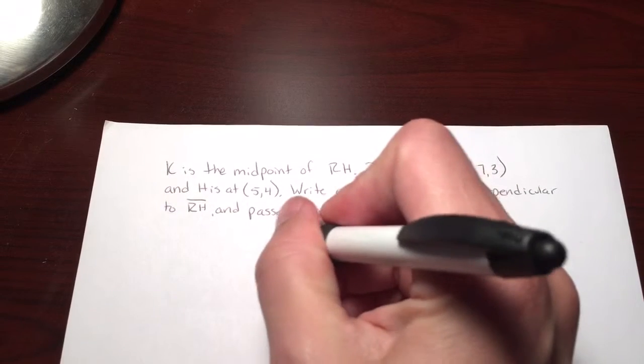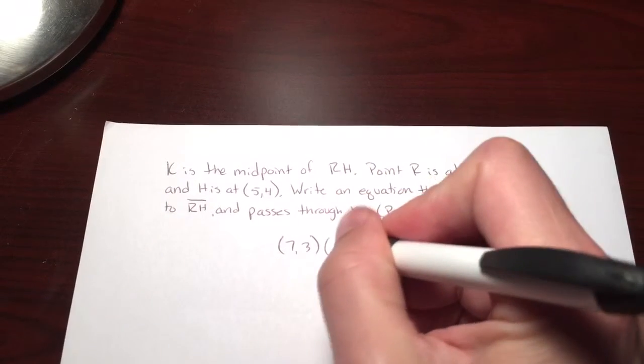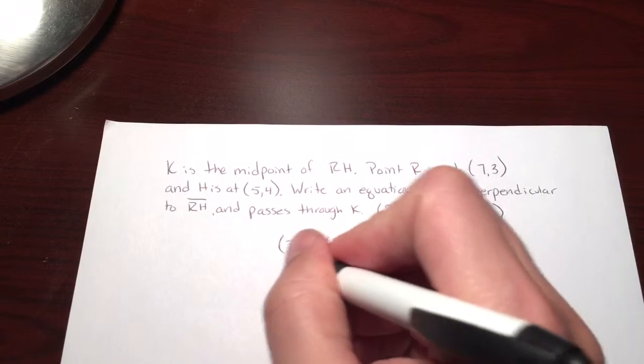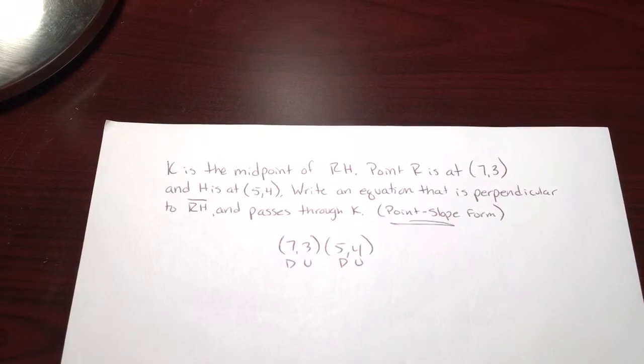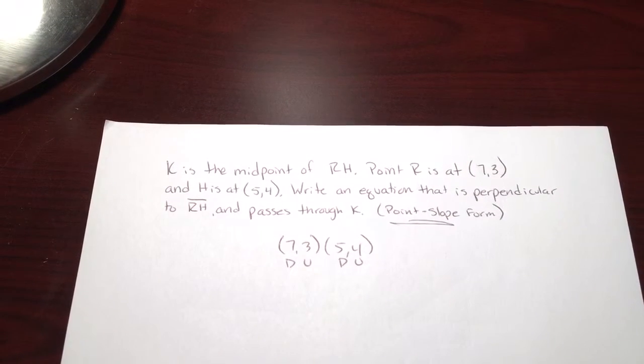So we've got 7, 3, 5, 4, doo doo. Down up, down up, right?